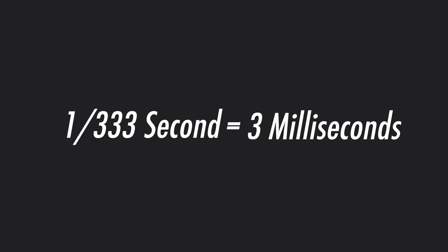We usually list it as a fraction because photographers really love fractions, but it'd be far less confusing if we just listed how many milliseconds it took. For example, 1/333rd of a second equals 3 milliseconds. Both are measurements of time.